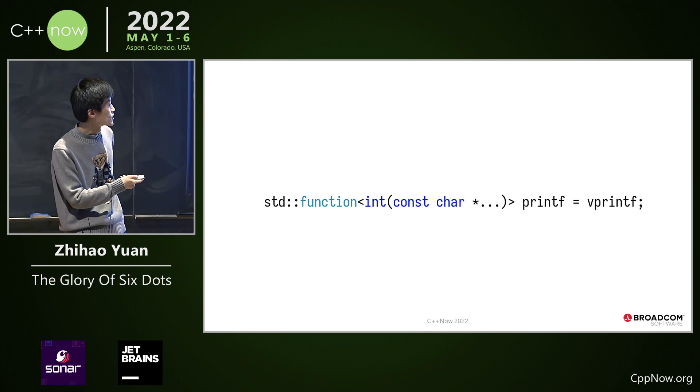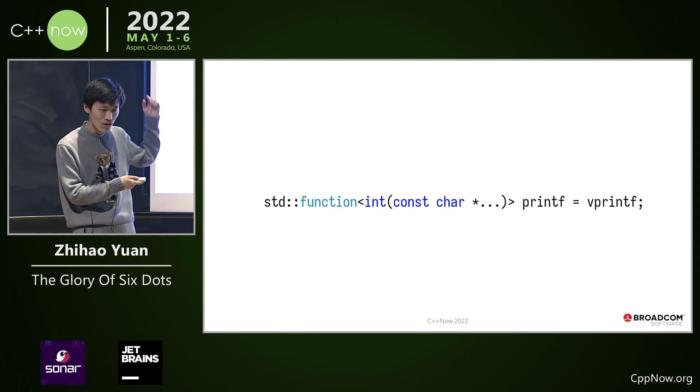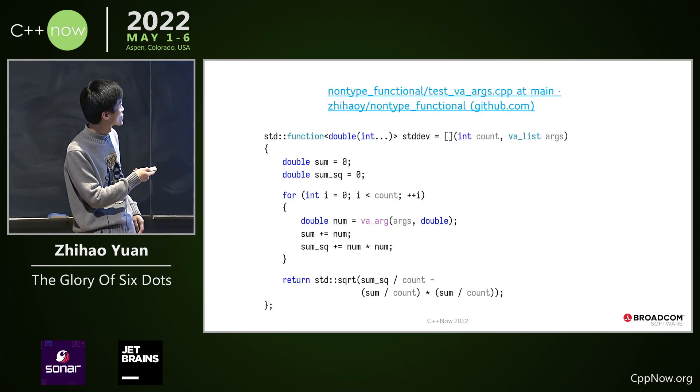In other words, if you want to create a clone of printf, you only need to declare this and assign it from vprintf. And the example goes on and on.